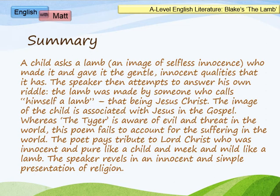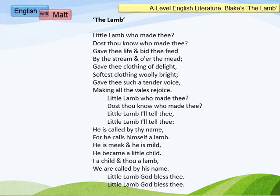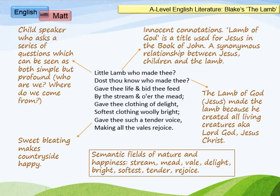Here is the poem — relatively short, and typical of Blake. You can see, particularly in the first half, lots of rhetorical questions which the speaker is asking the lamb about its origins and characteristics. We have a semantic field of nature and happiness, which is common with innocence: stream, mead, veil, delight, bright, softest, tender, rejoice. The tone and register of this language clearly places it within innocence, where we haven't got that world of experience knocking at the door, making things seem malevolent and nasty.